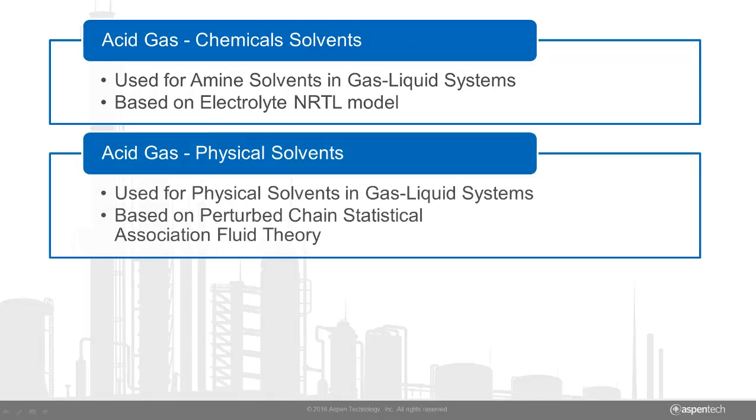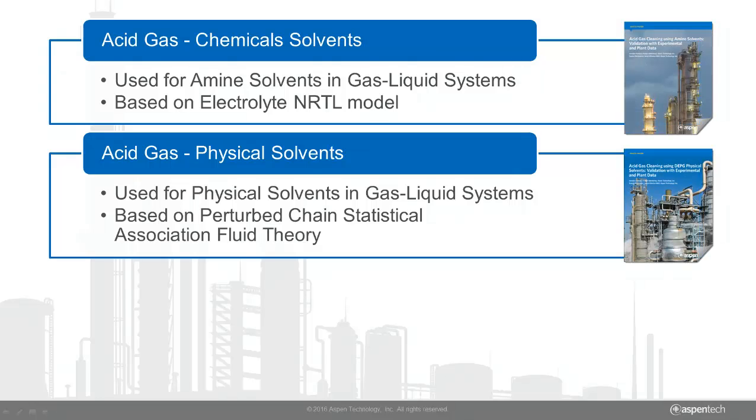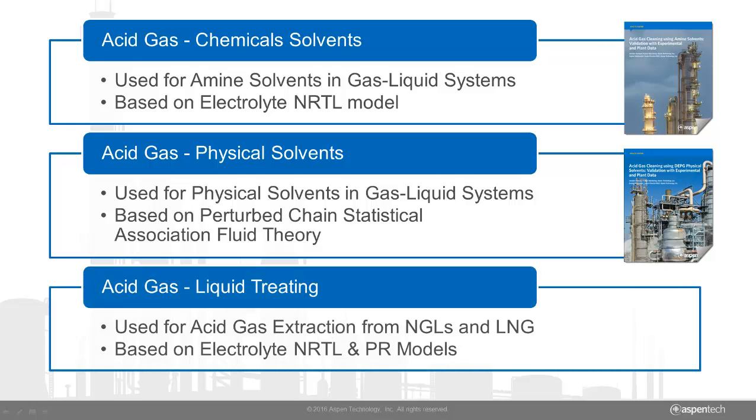The physical solvents package is based on the perturbed chain statistical association fluid theory. Both of these property packages have been validated with plant data and the results have been published for you to view. The liquid-liquid treatment package uses electrolyte NRTL and Peng Robinson models and has been validated based on the most recent literature available.